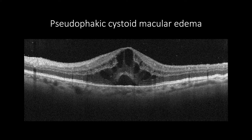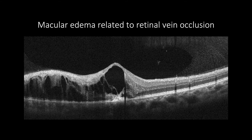OCT is the gold standard to diagnose cystoid macular edema post-cataract surgery, which appears as increased macular thickness and intraretinal hypo-reflective cystic changes with loss of foveal pit and with or without subretinal fluids. Sometimes, cystoid macular edema may cause clinical diagnostic confusion between pseudophakic cystoid macular edema and other retinal vascular diseases in high-risk patients.